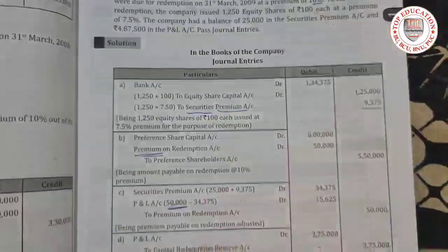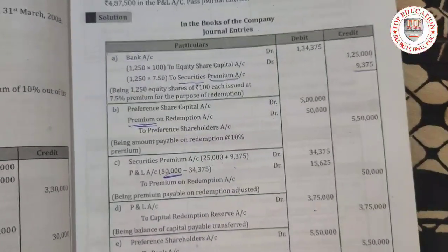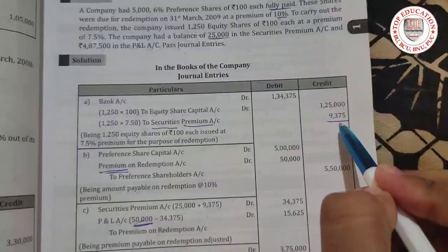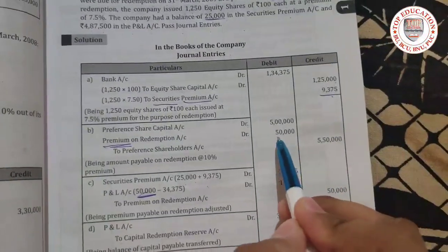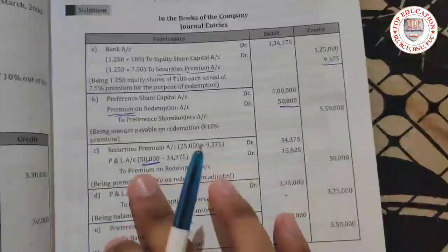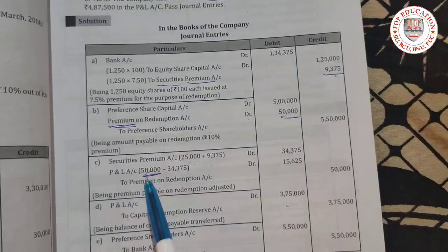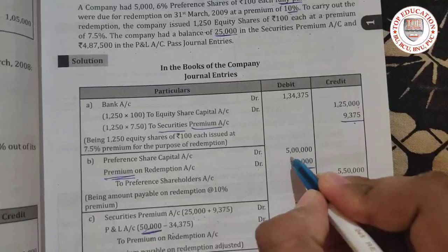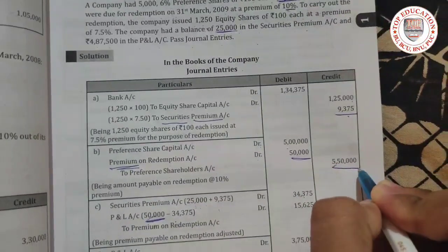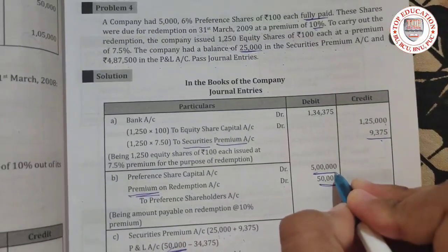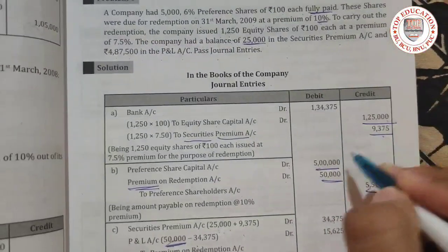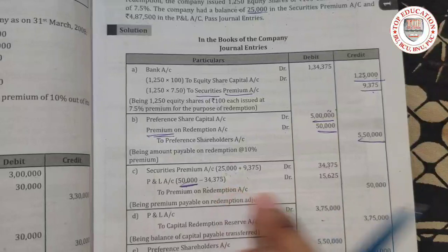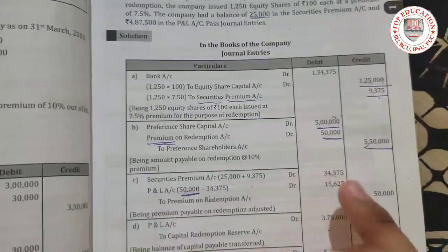We add ₹9,375 from the equity share premium to the existing balance of ₹25,000 to get the total securities premium. Then we minus the preference redemption premium amount. After this calculation, the securities premium balance and the profit and loss account balance of ₹50,000 minus ₹3,43,750 are worked out, giving us the final figure after accounting for the premium deduction.